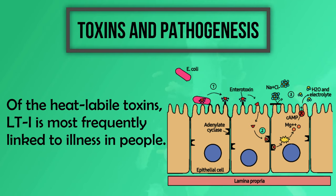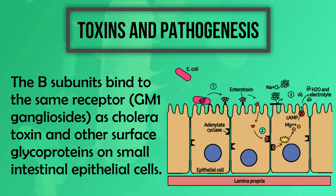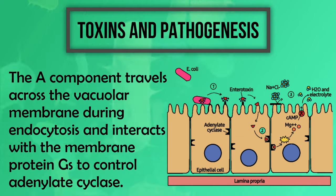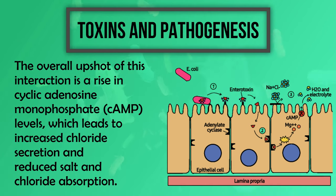Of the heat-labile toxins, LT1 is most frequently linked to illnesses in people, with 80 percent structural and functional similarity to cholera toxin. LT1 has one A subunit and five identical B subunits. The B subunits bind to the same receptor — GM1 gangliosides — as cholera toxin, and to other surface glycoproteins on small intestinal epithelial cells. The A component travels across the vacuolar membrane during endocytosis and interacts with the membrane protein Gs to control adenylate cyclase. The overall result of this interaction is a rise in cyclic adenosine monophosphate (cAMP) levels, which leads to increased chloride secretion and reduced salt and chloride absorption.